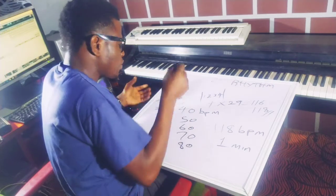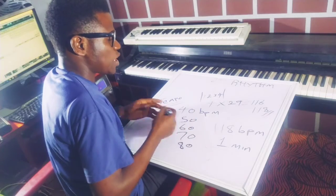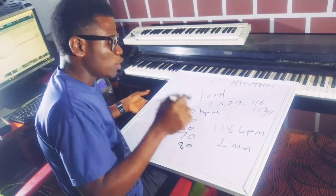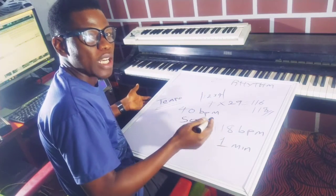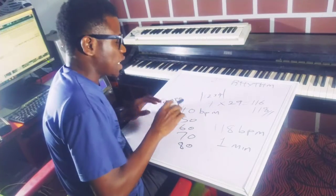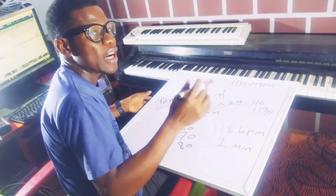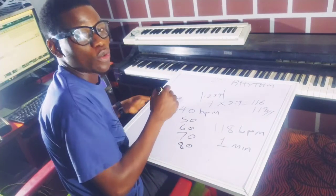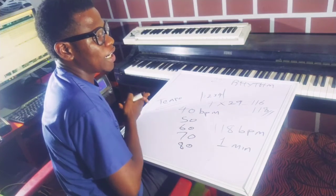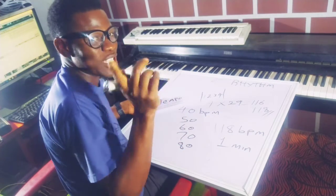I hope you've been able to understand tempo. You can have 40 beats per minute, 50, and so on. If you want to practice, go to the Google Play Store or iOS App Store and download a metronome app to try it yourself. If you have any questions about this or any topic I've covered, please ask in the comment section and I'll be happy to answer. See you later.